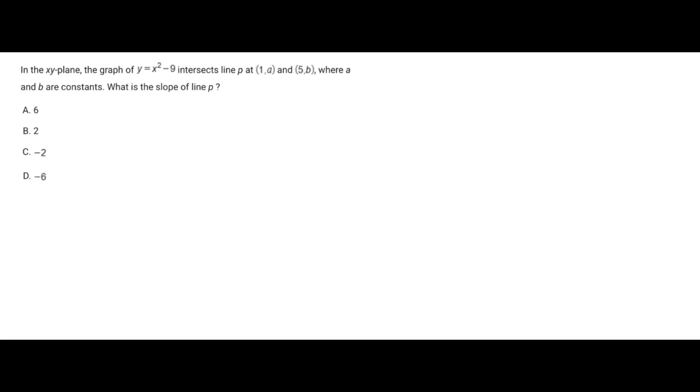All right, so here's the thing. Since the graph of this equation, y equals x squared minus 9, intersects with line p, and we are given the x coordinates of line p, what we can do is plug in these x coordinates into the equation, find our y value. And since we know they intersect, then those coordinate points must be the same, and so whatever y value we get, we can just put it in for a and b. So I'll show you how it works here.